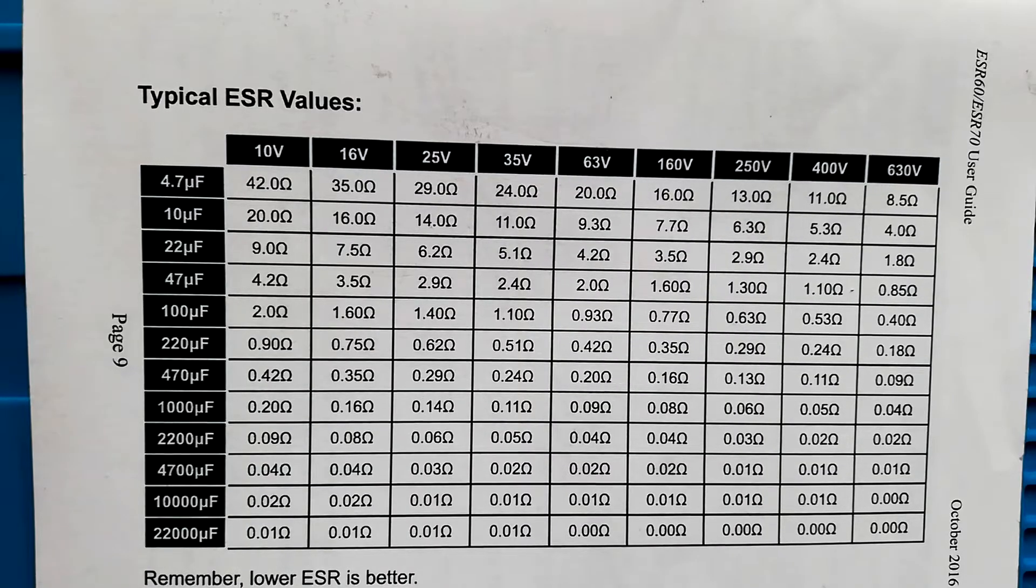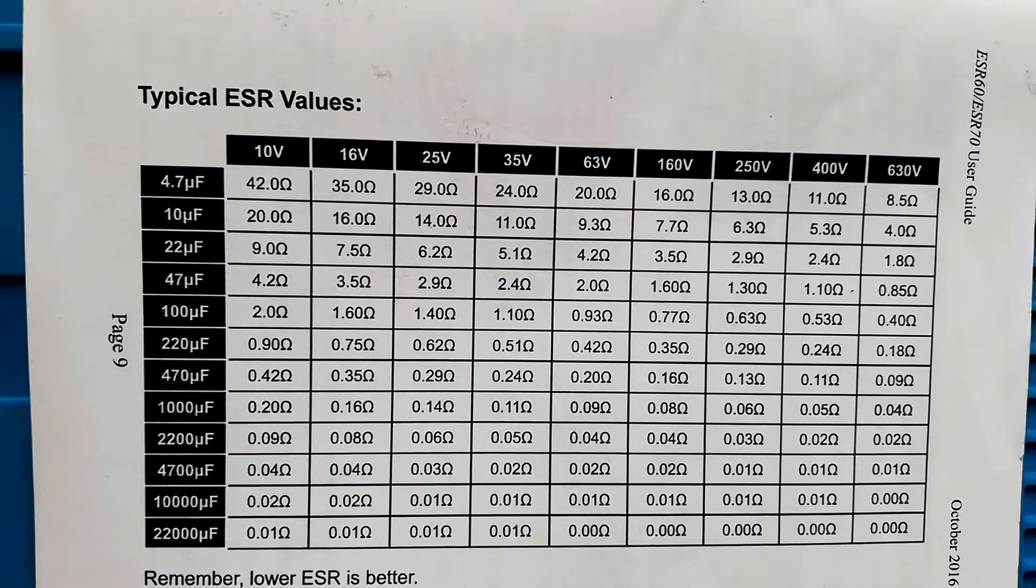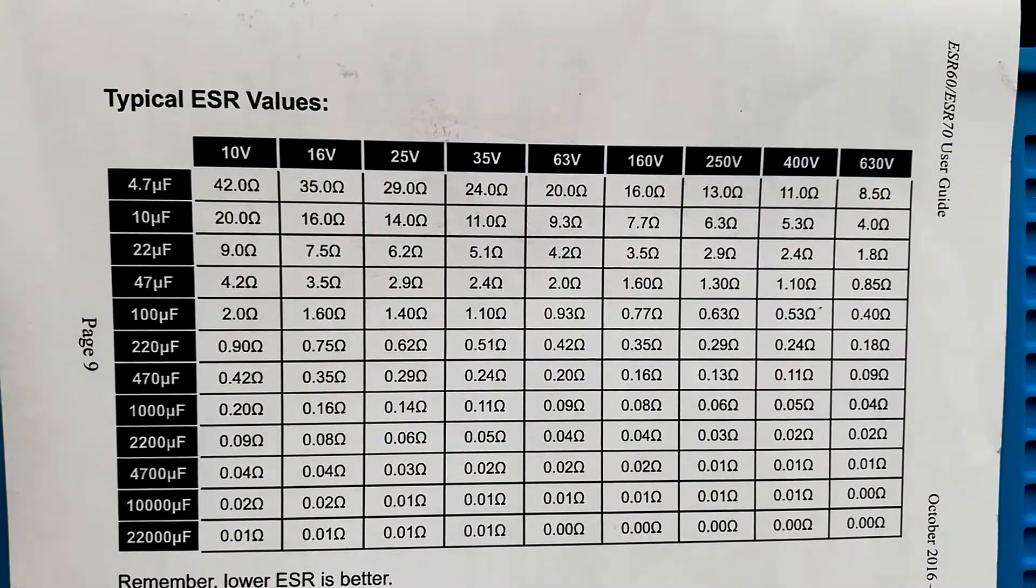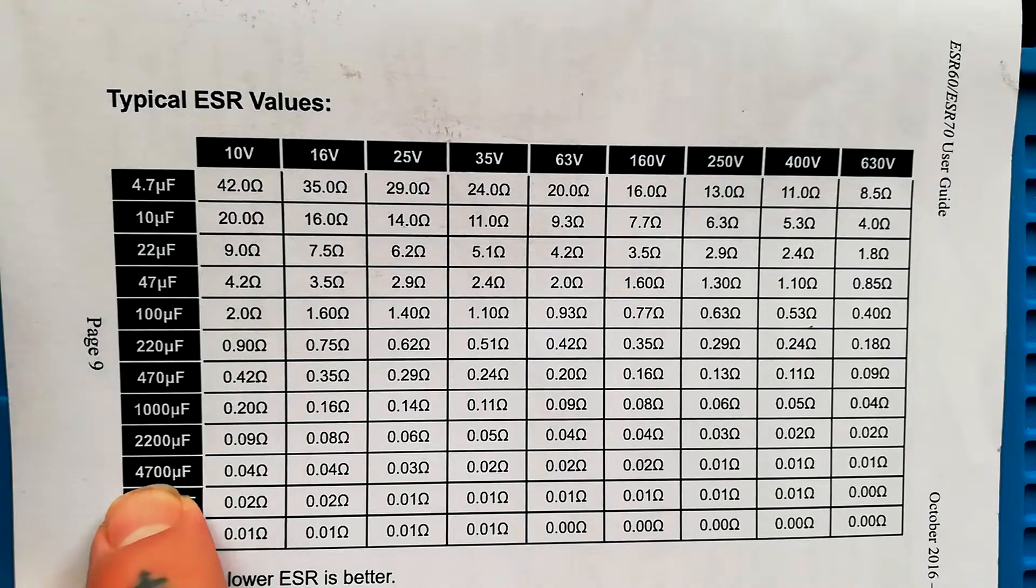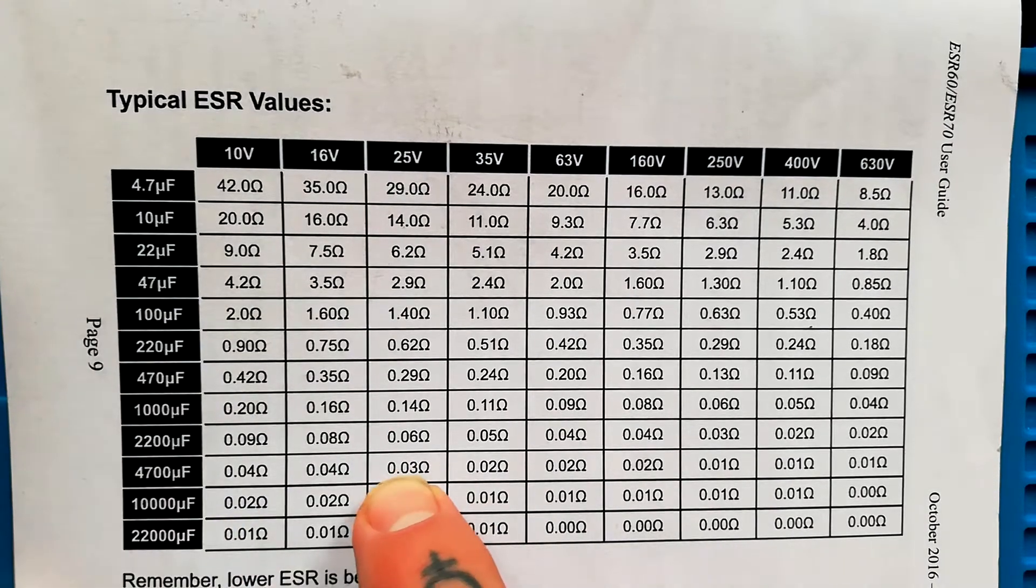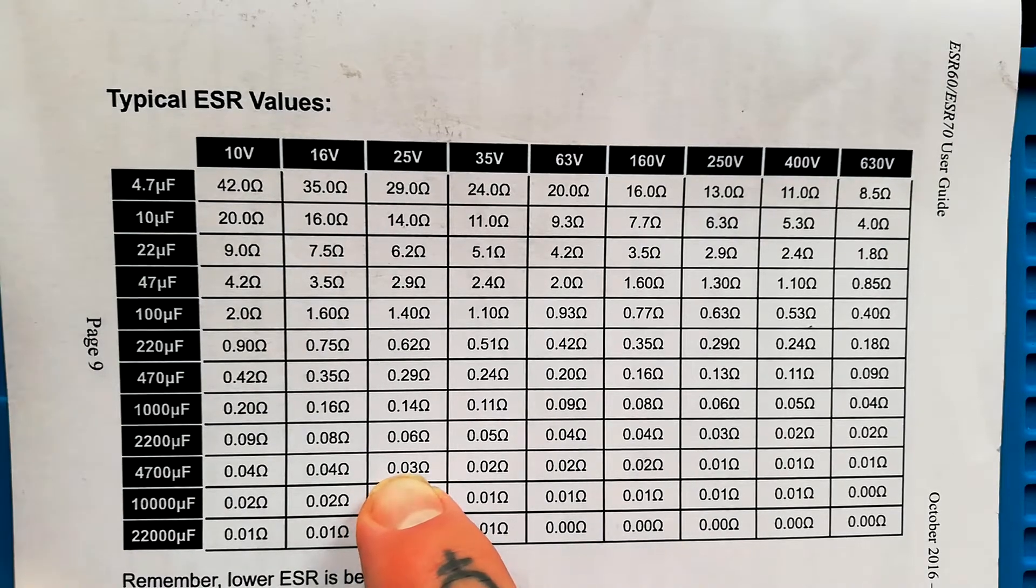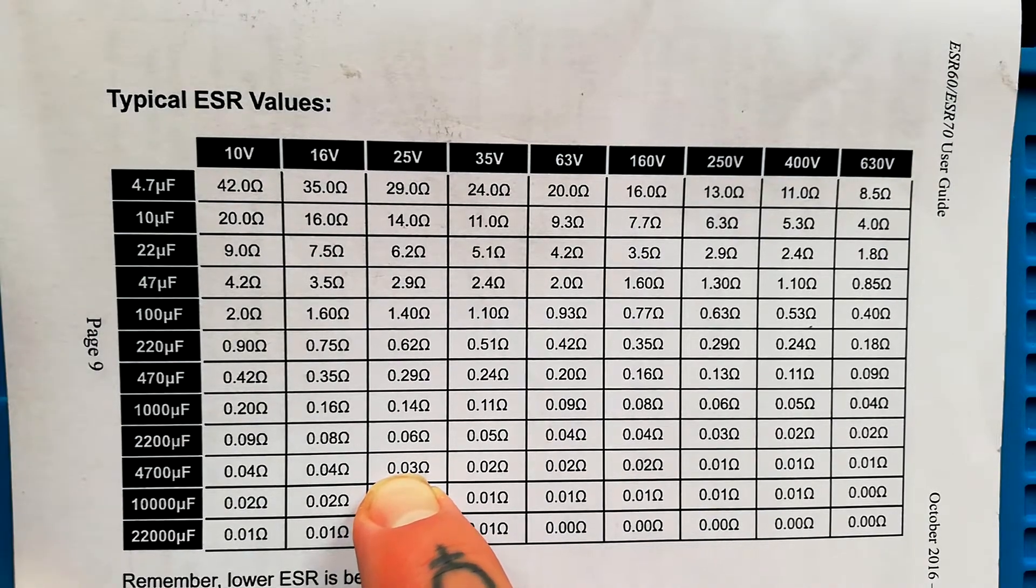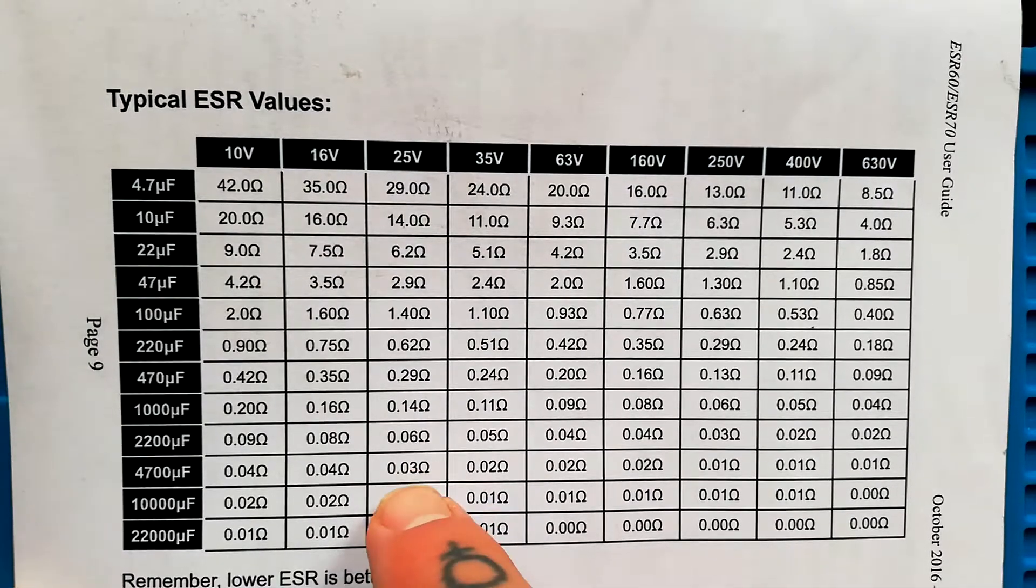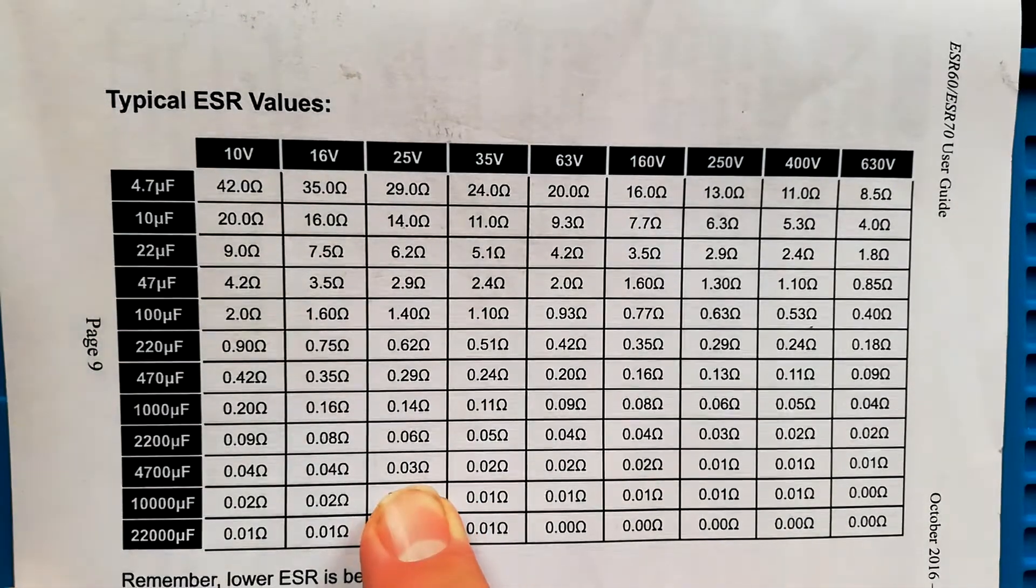The other thing is to test the equivalent series resistance. I used to have a good ESR meter but it actually got destroyed in the house fire I had last year. I've still got the manual for it here but that's not a reading that you would get on most multimeters. If I use the example I just gave 4700 microfarads and I believe there are 25 volts so I should only have 0.03 ohms of equivalent series resistance. If it was higher than that then that would be an indication that the capacitor needed to be replaced.